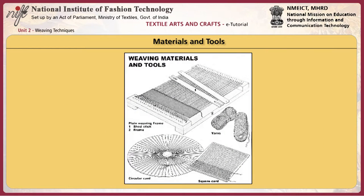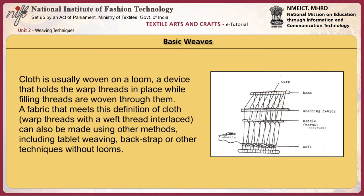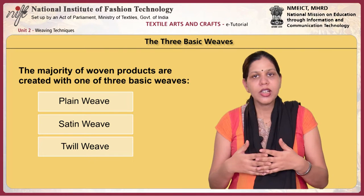These are the tools and materials used in weaving. This module will examine various basic weaves and weaving techniques. Cloth is usually woven on a loom, a device that holds the warp threads in place while filling threads are woven through them. A fabric can also be made using other methods including tablet weaving, back strap or other techniques without looms. The way the warp and filling threads interlace with each other is called the weave.